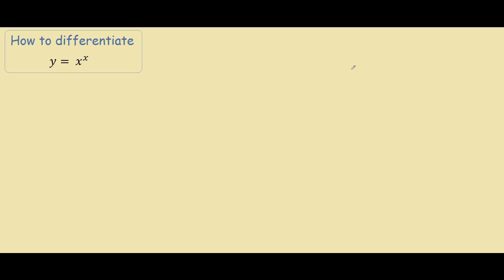In our first step, we will be employing a small trick where we know that e to the power of ln of x equals just x. This is because the inverse function of e is just ln.